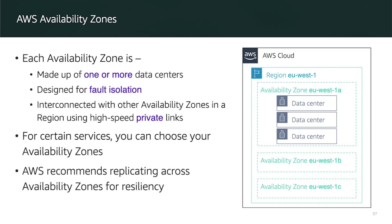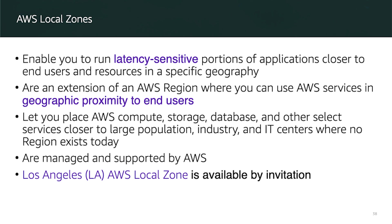For certain services, you can choose your availability zone, and AWS recommends replicating your data across multiple availability zones for data resilience. There is also AWS Local Zones, which enables you to run latency-sensitive portions of applications closer to end users and resources in a specific geography. It is an extension of an AWS region where you can place AWS compute, storage, database, and other select services closer to a large population, industry, and IT center. Local Zones are managed and supported by AWS, and currently the Los Angeles AWS Local Zone is available by invitation.